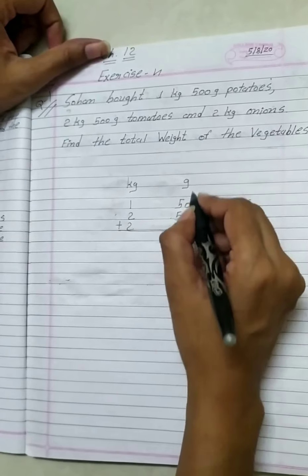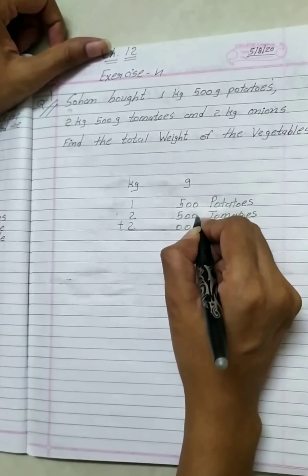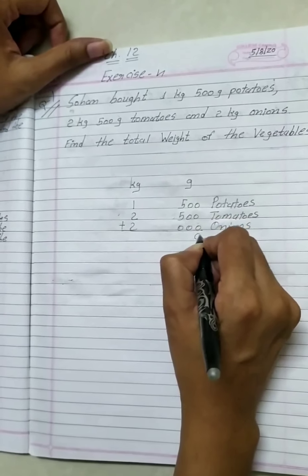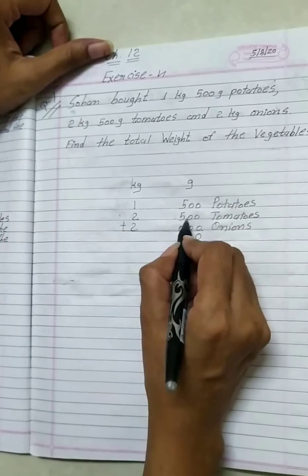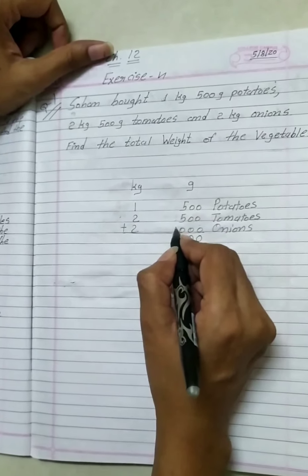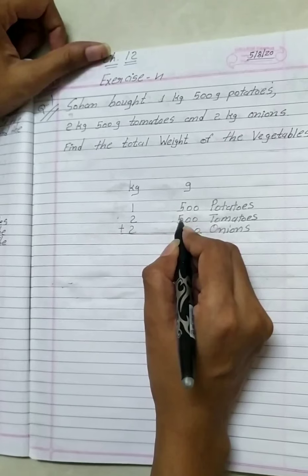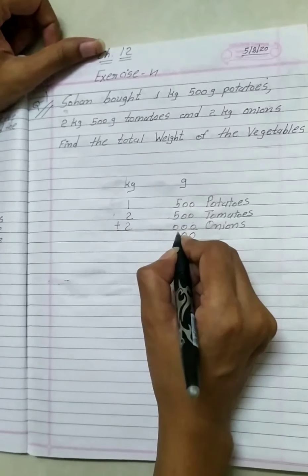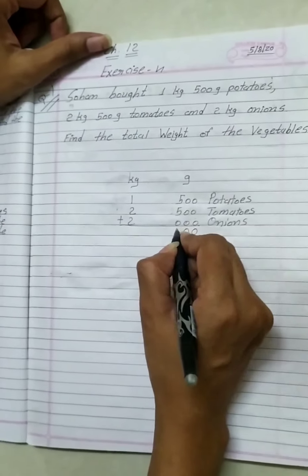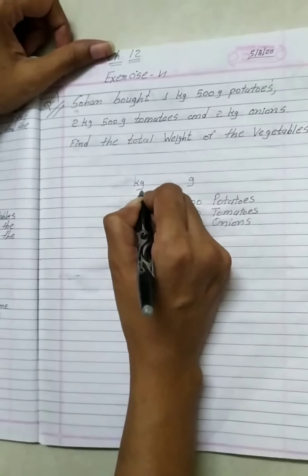So we do addition. Start from gram place. 0 plus 0 plus 0 equal to 0. 0 plus 0 plus 0 equal to 0. Then third, 5 plus 5 equal to 10. 10 plus 0 equal to 10. 0 is down. 1 is carry.